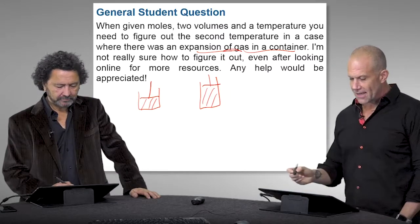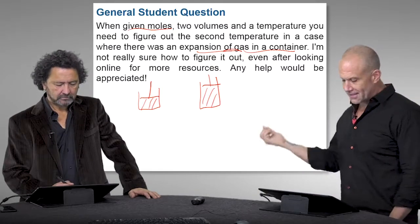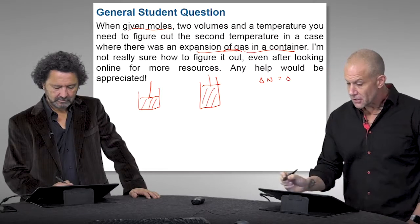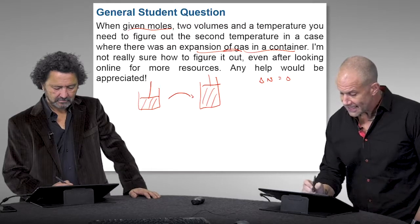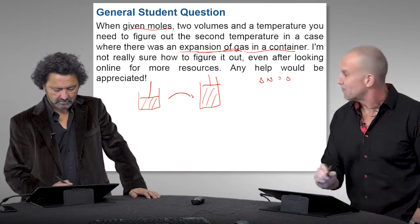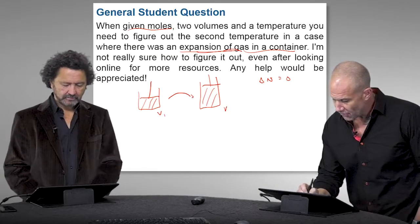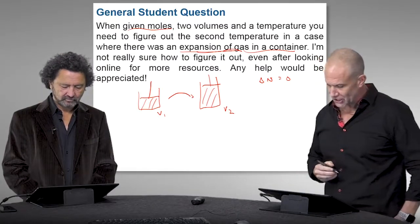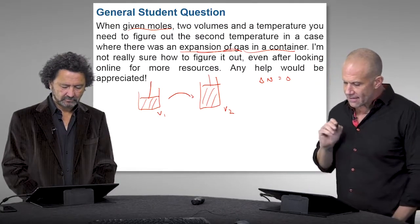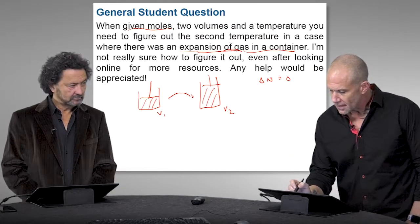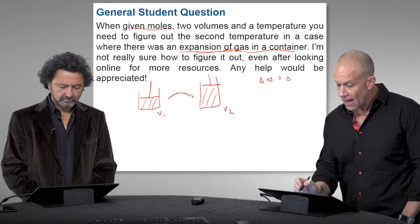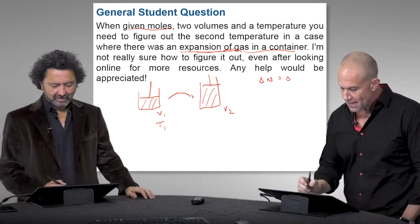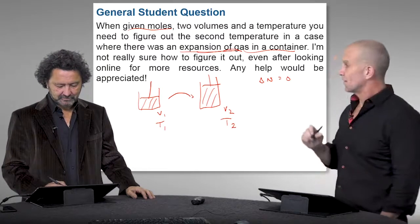Under a given number of moles, for a constant composition — so delta N is zero — there are two different volumes, which is explicit in the idea of gas expansion. Volume one and volume two, where V2 is greater than V1. He then gives a hint: these two volumes and a temperature are known, and you need to figure out the second temperature.